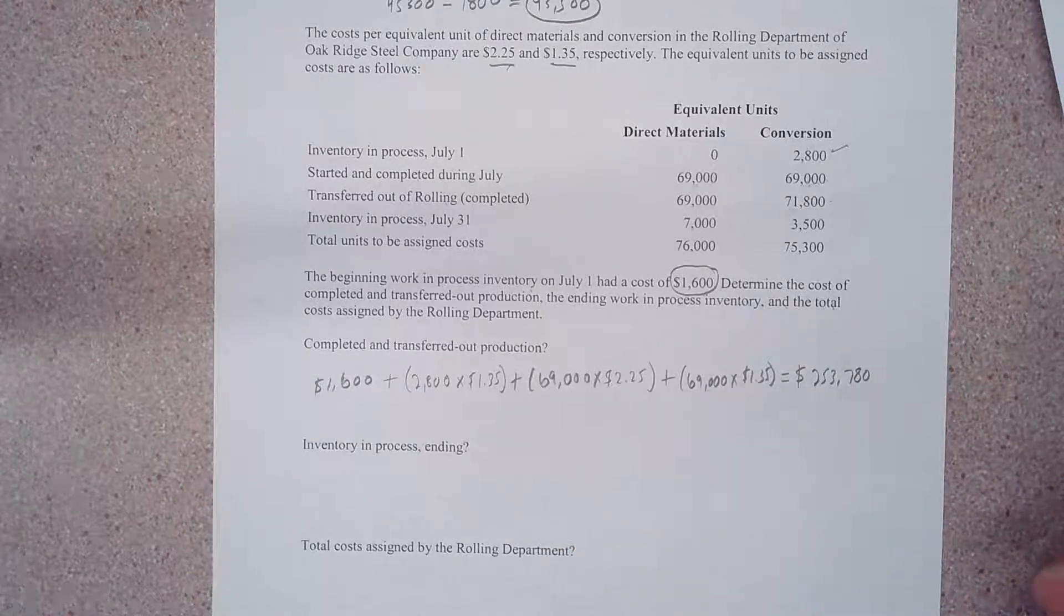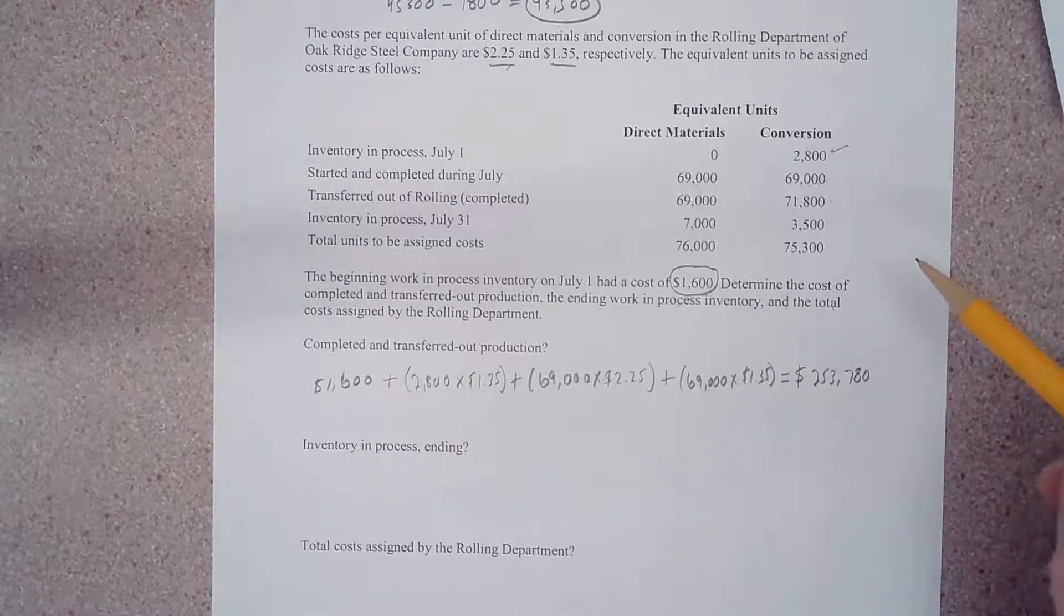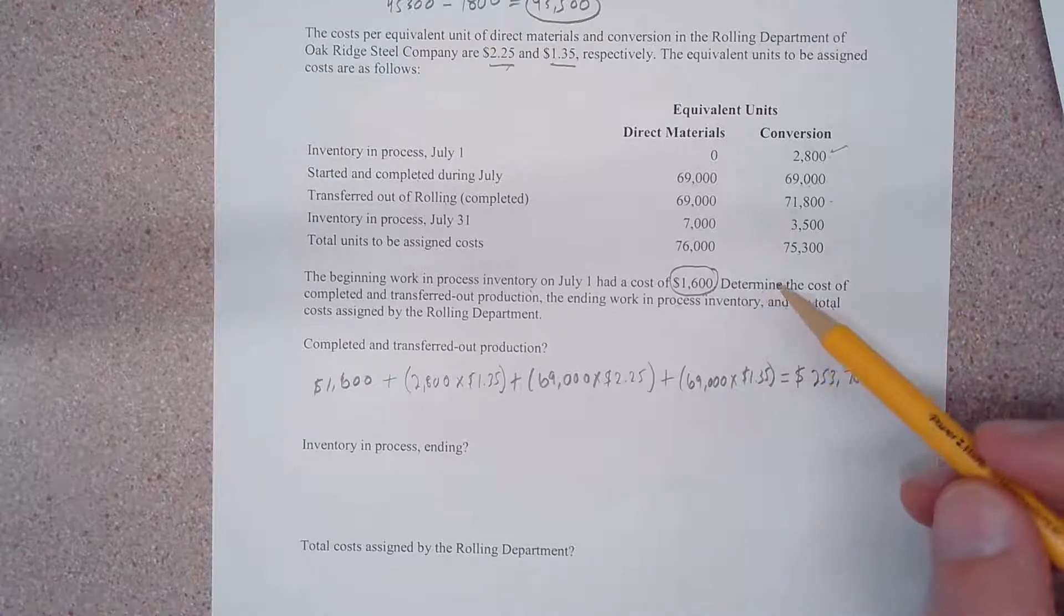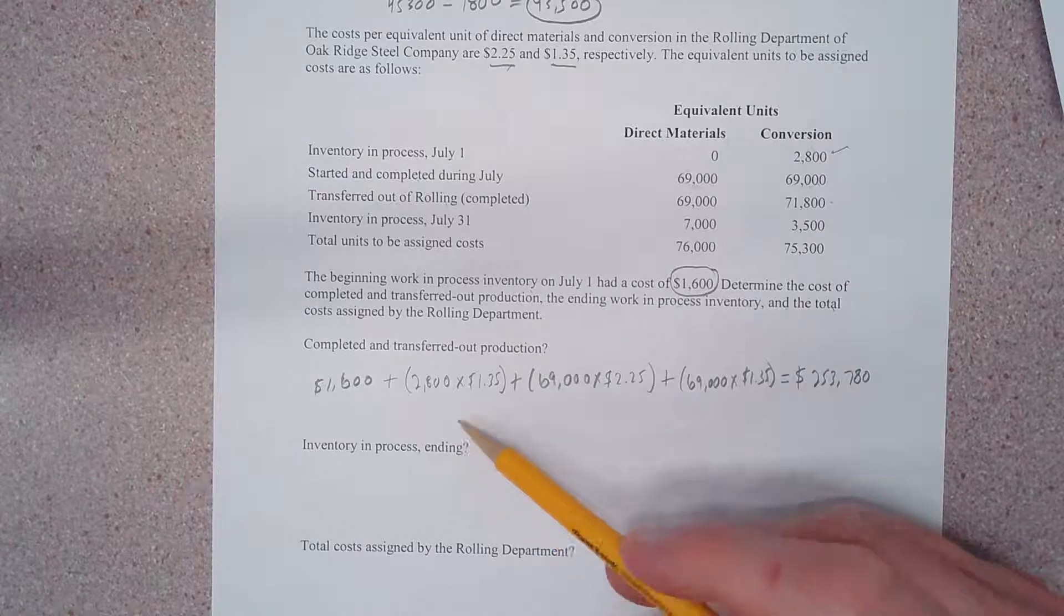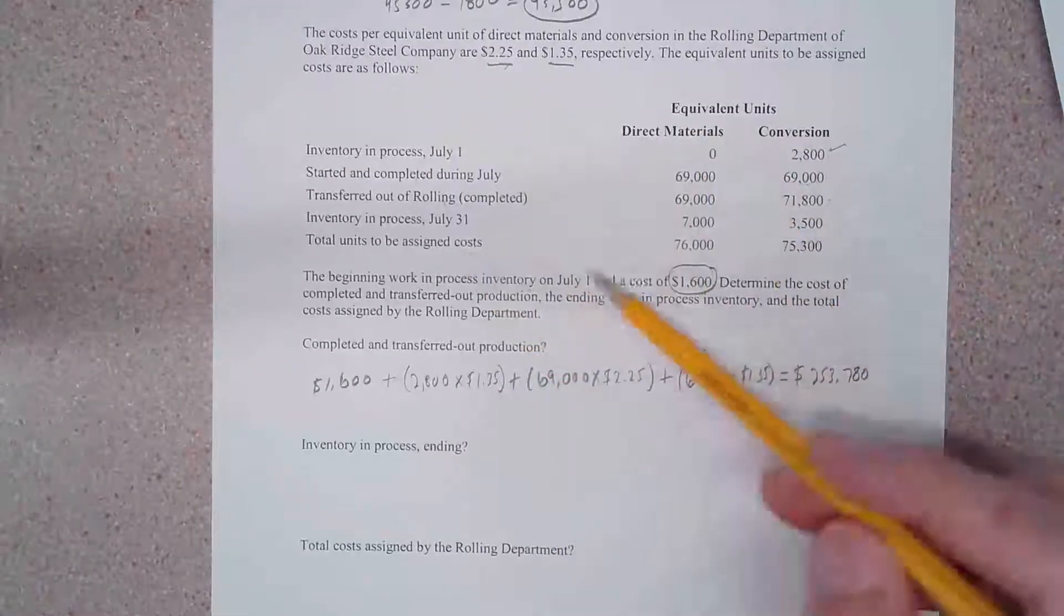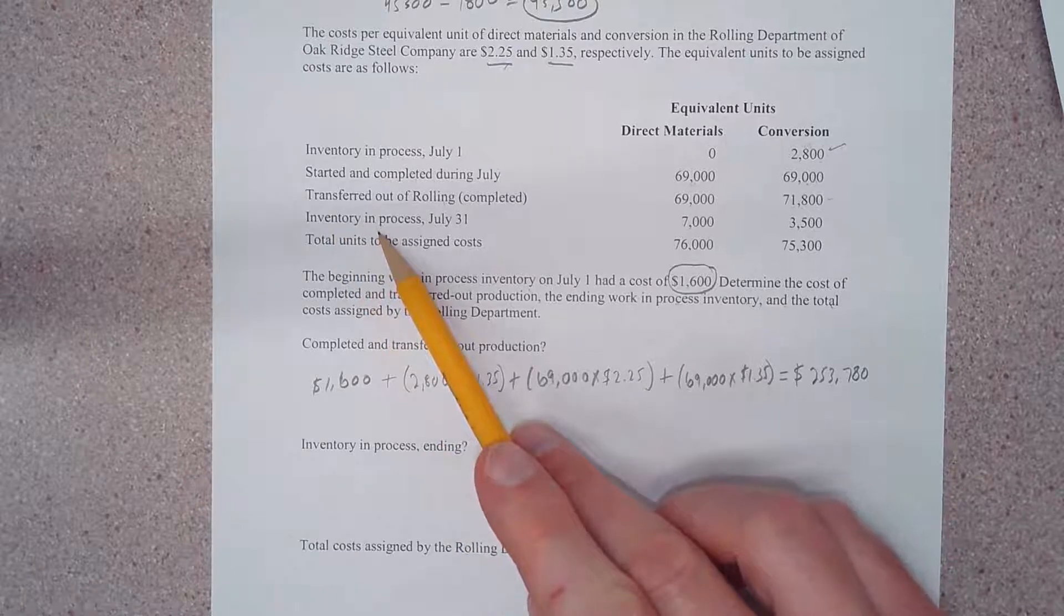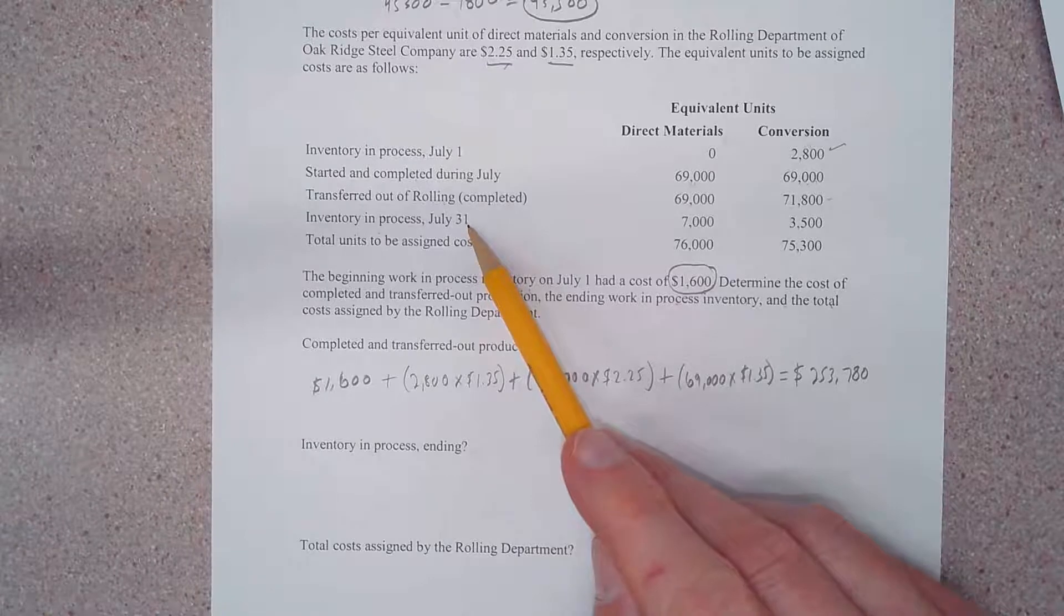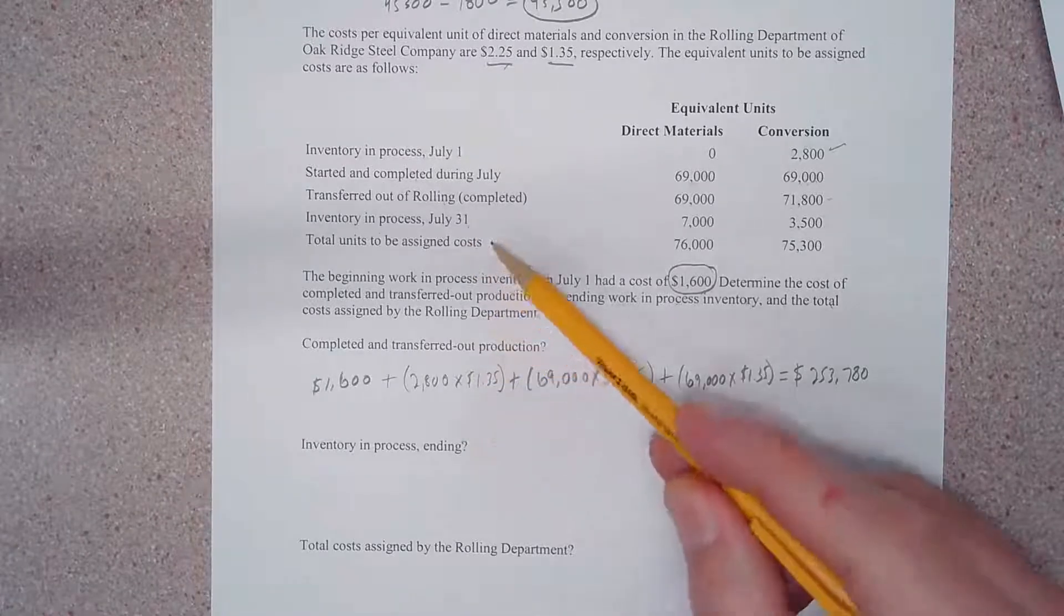I told you before we weren't going to use all these numbers at once, but we were ultimately going to use all of them. So you're asking us for inventory in process ending. We can merely go up here to our set of facts and find inventory in process. If we know that July 31st is the last day of the month, then July 31st is ending - see what we did there?